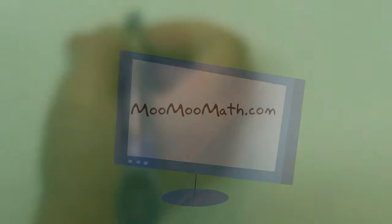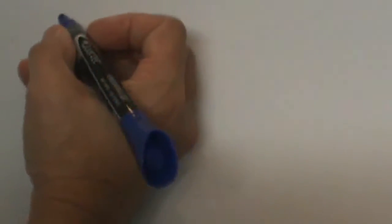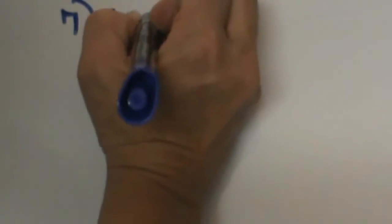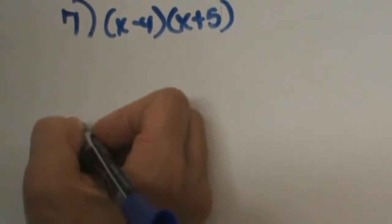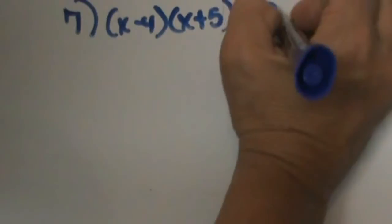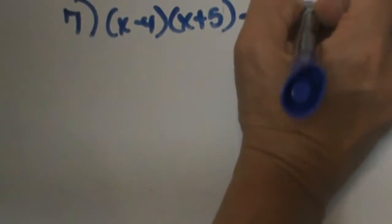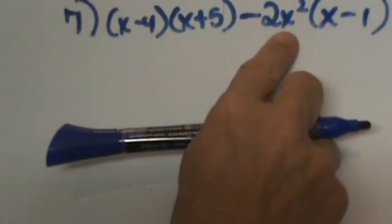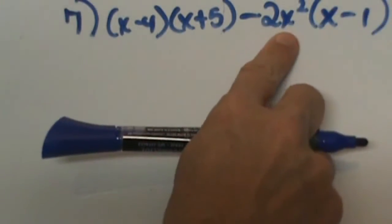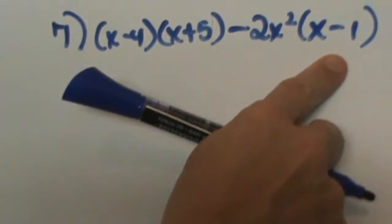Number 7. This is the one where we are starting to get kind of fancy. We have x minus 4 times x plus 5, so we have a binomial times a binomial. Then we are going to subtract 2x squared times x minus 1. This one is a monomial times a binomial.